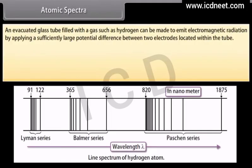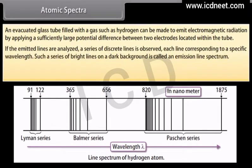An evacuated glass tube filled with a gas such as hydrogen can be made to emit electromagnetic radiation by applying a sufficiently large potential difference between two electrodes within the tube. If the emitted light is analyzed, a series of discrete lines is observed, each corresponding to a specific wavelength. Such a series of bright lines on a dark background is called an emission line spectrum.